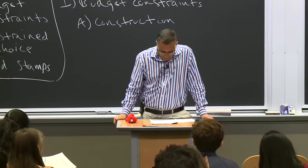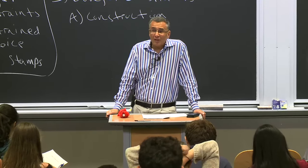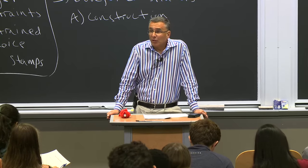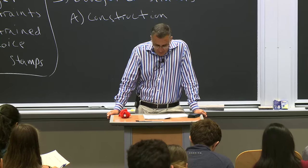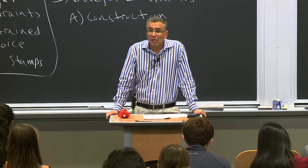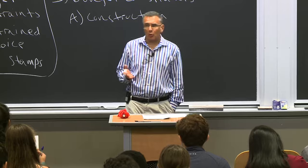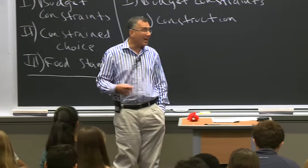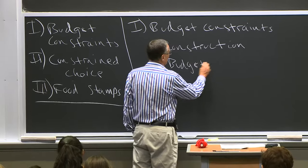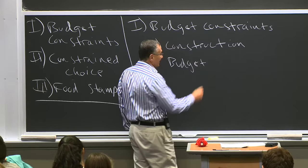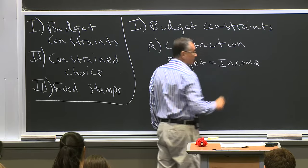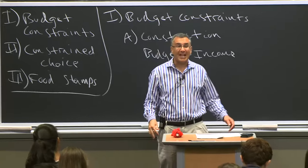Last time we talked about the fundamental axiom of consumer choice: more is better. So what stops people from just binging on everything? It's their budget constraint — their limited resources. For most of this course we're going to make a simplifying assumption that your budget, that is what you spend, equals your income — what you earn. There won't be any savings or borrowing.